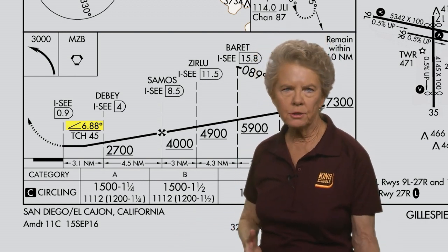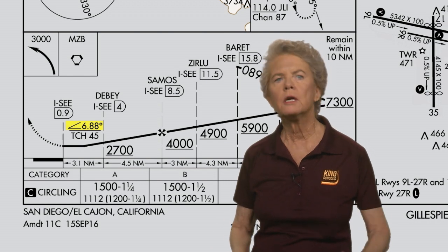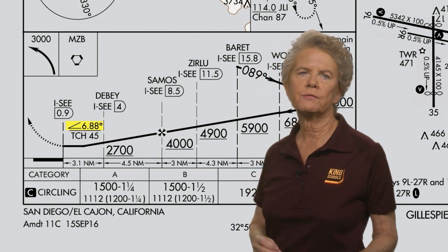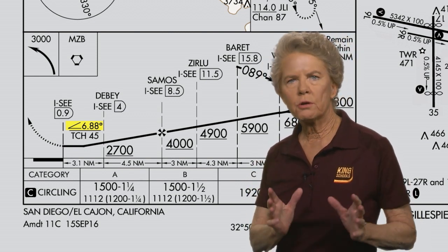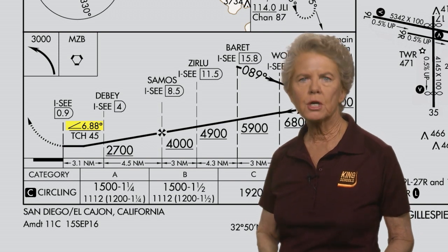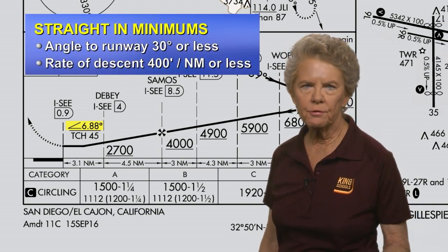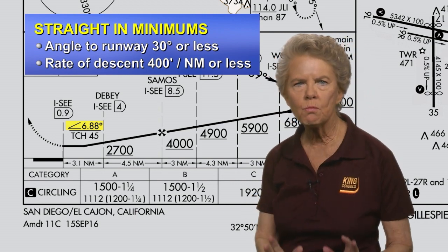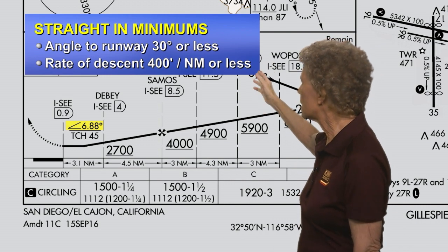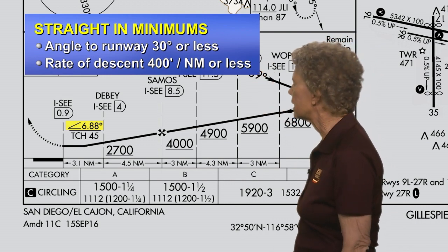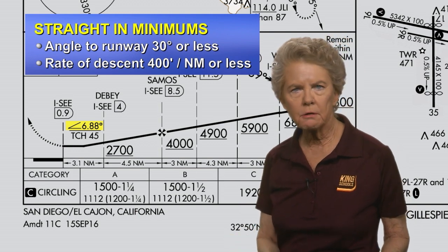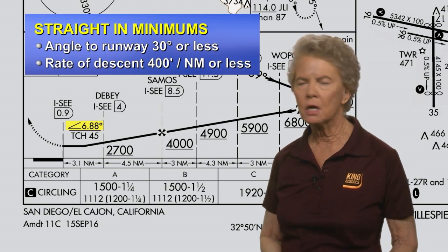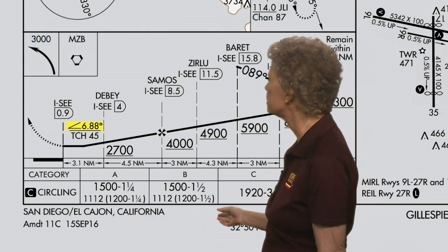If you divide the altitude to lose by the distance to the runway, you'll find your required rate of descent is 746 feet per nautical mile. In order to qualify as a straight-in approach, it must be within a 30-degree angle to the runway and the required rate of descent must be no more than 400 feet per nautical mile. If the approach doesn't meet that criteria, you will not have any straight-in minimums published in the minimum section. You only have circling minimums published on the approach.